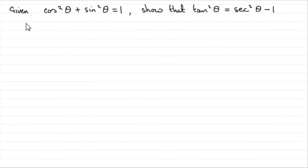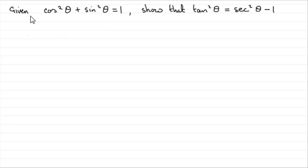In this part of the question, we're given that cos²θ + sin²θ = 1, and we've got to show that tan²θ equals sec²θ minus 1. They tell us in the question — this is quite interesting — they say given the identity cos²θ + sin²θ = 1, yet they don't use the identity symbol, just the equal symbol.